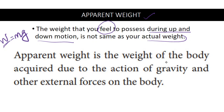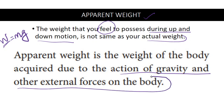Apparent weight is the weight of the body acquired due to the action of gravity and other external forces on the body. Gravity gives the real weight. The other external forces acting on your body at a given moment cause you to feel a different weight — that is apparent weight. It is not the real weight.